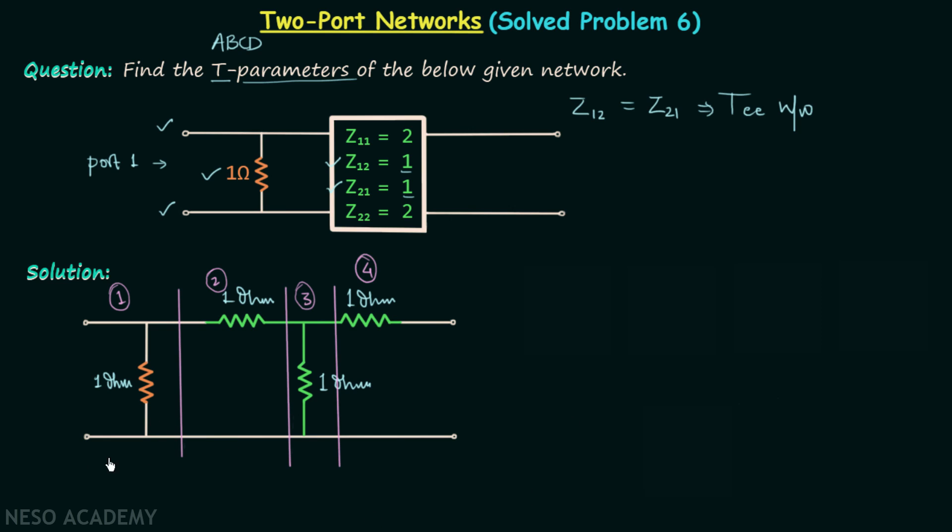Now if we talk about the first network, then we know that it will have the T-parameters matrix as 1, 0, 1 over Z and 1. Z is equal to 1 ohm, therefore 1 over Z will be equal to 1. So in this way we have 1, 0, 1, 1 as the elements of T-parameters matrix of our first network.